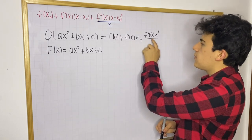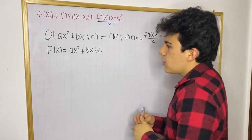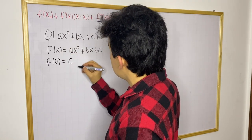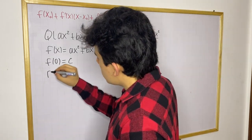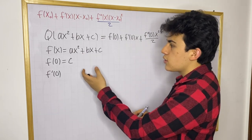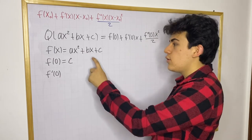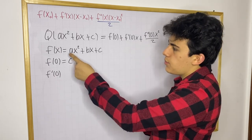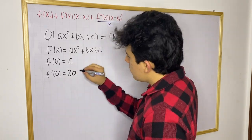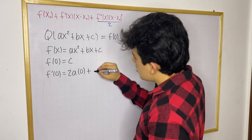So let's find these particular values for f and plug them into the expression. We know f of 0 is simply going to be c. Now what about f prime? We know f prime of 0 — the derivative of a quadratic function gives us a linear function: c disappears as a constant, the derivative of bx gives us b, and then we have 2ax by the power rule. So at x equals 0, the 2ax term goes to 0, and f prime of 0 is just b.